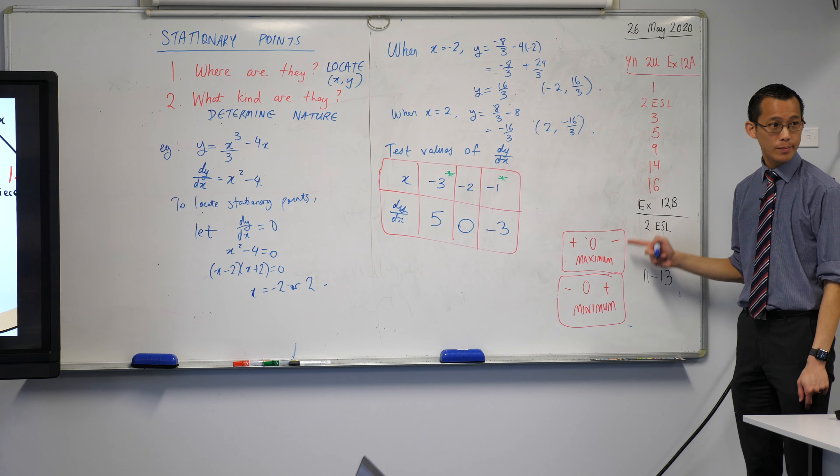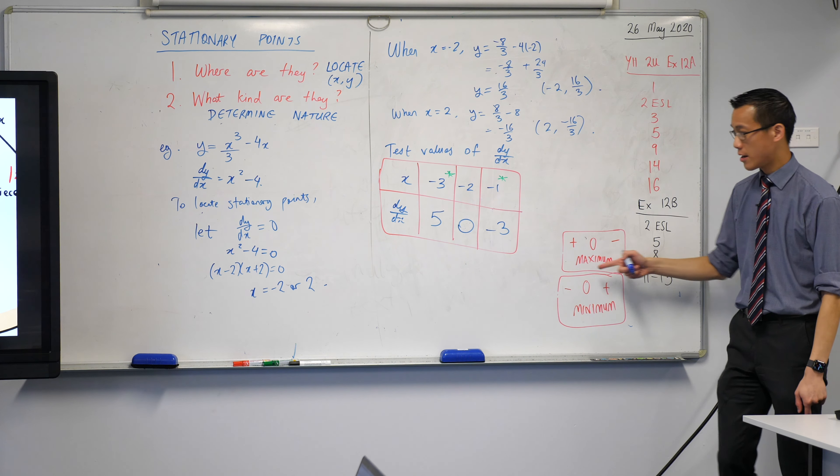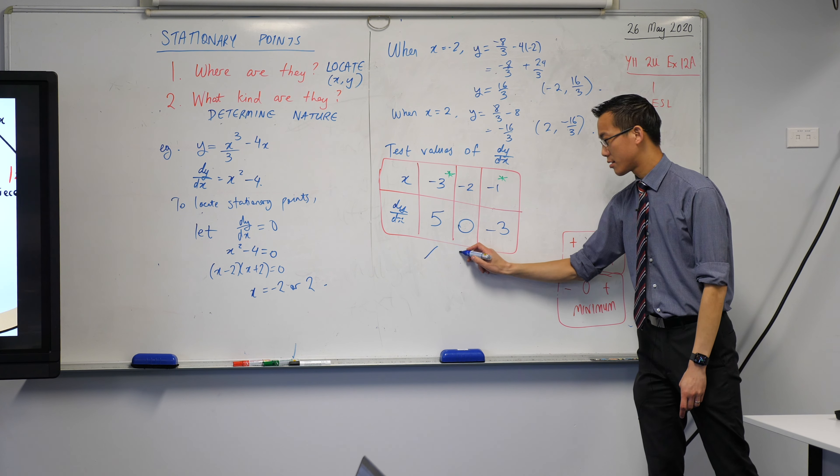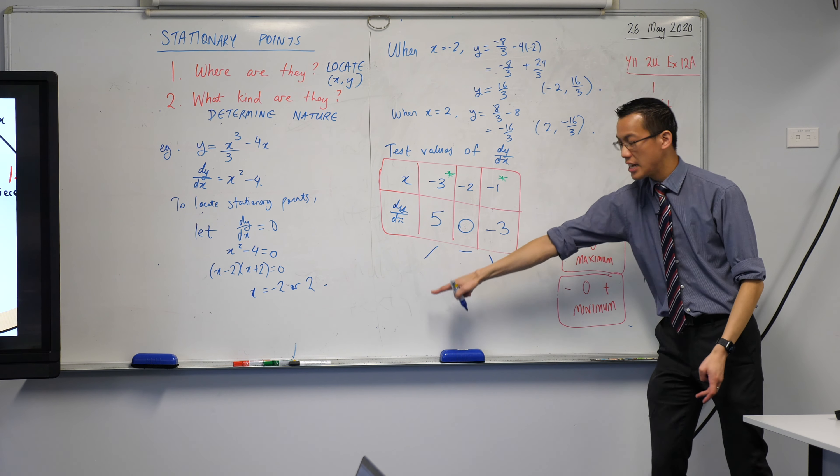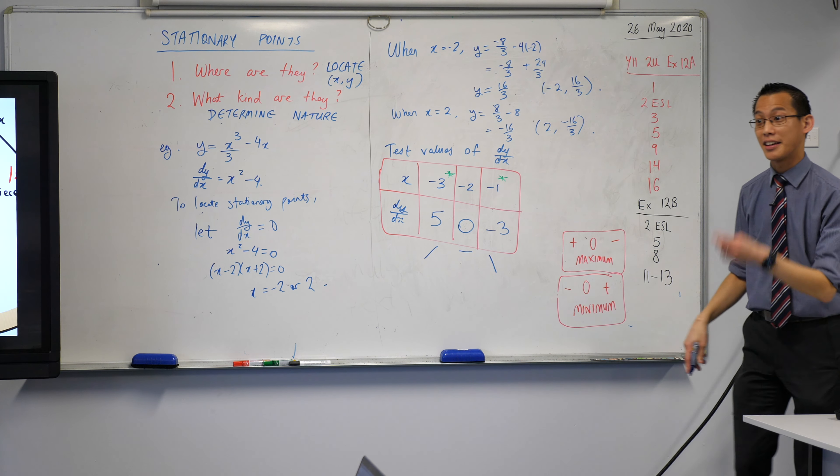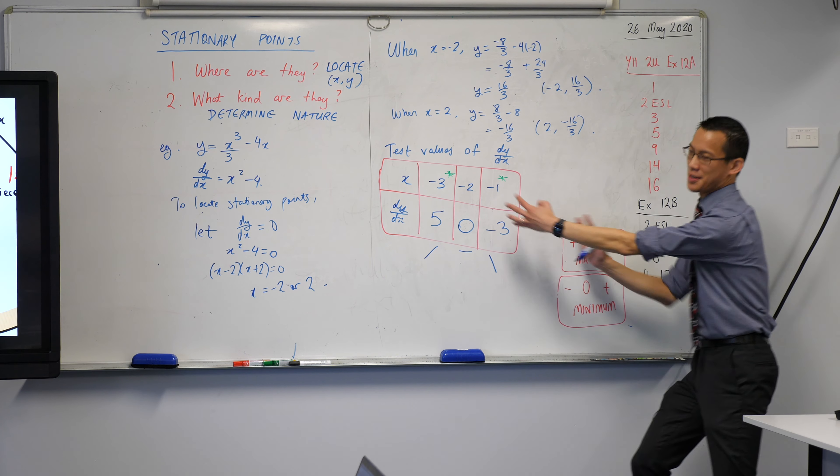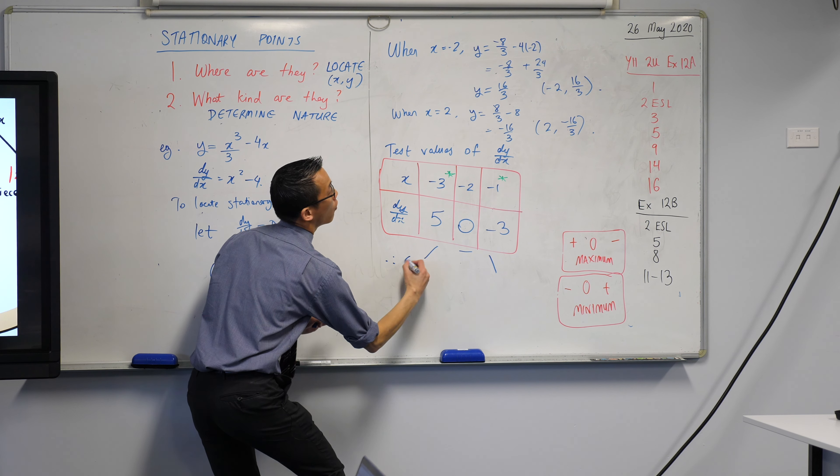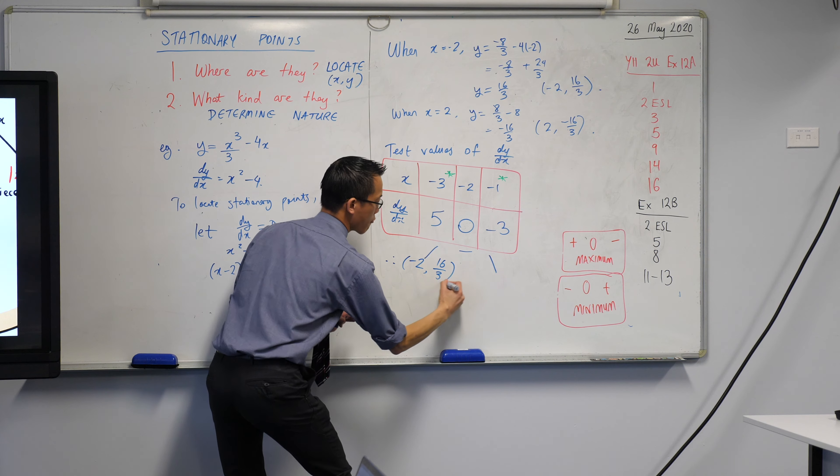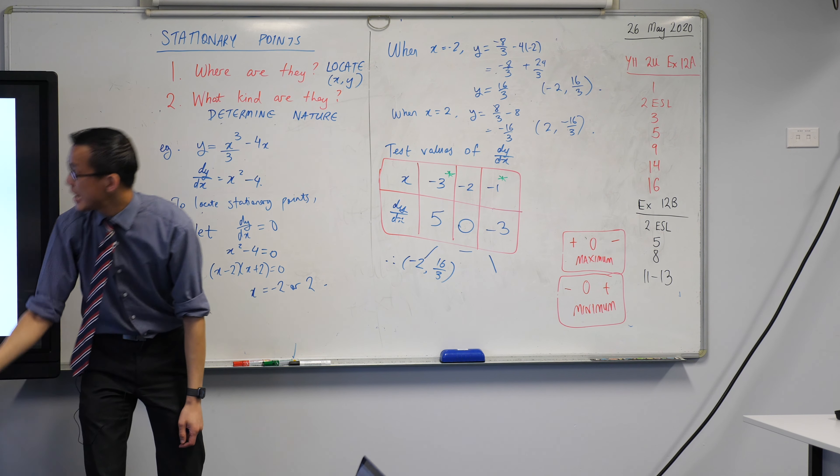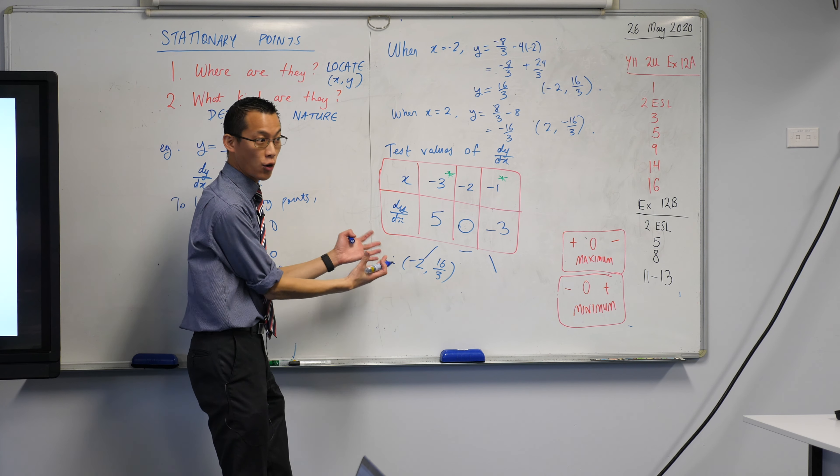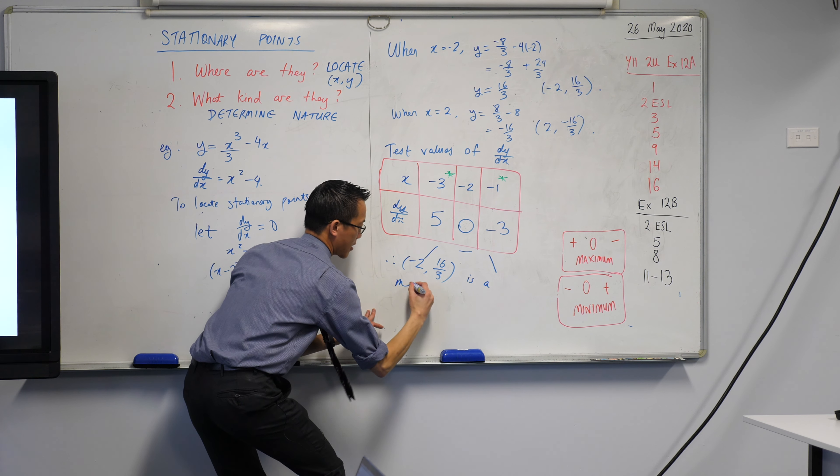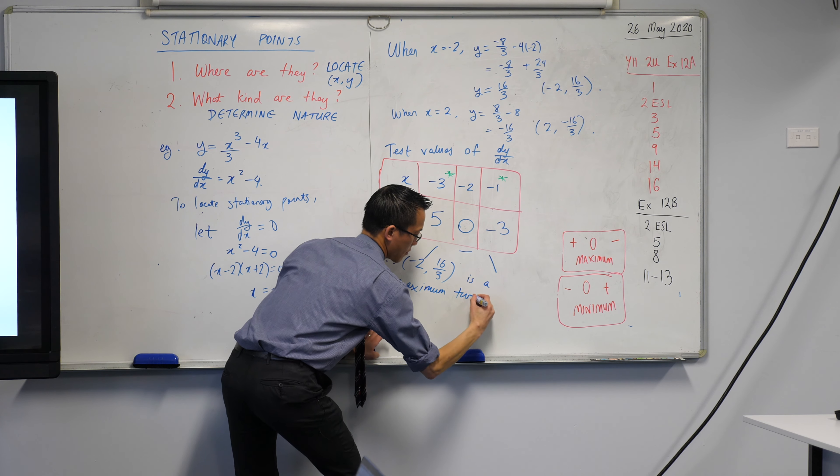So which one is it? It's the maximum. Positive, 0, then negative. And you can even visualize this for you. What does the gradient look like? It's increasing, then it's stationary, it's flat, and then it's decreasing. You can even see the maximum shape right there. So therefore, I would say, based on this table of values, therefore, negative 2, 16 over 3 is a maximum turning point. That's what I call it. That is the nature of the stationary point. This is a maximum turning point.